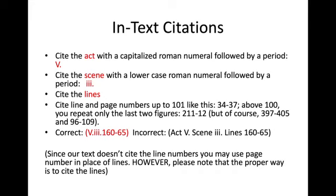When I cite the lines, I'm going to go back and use normal numbers. So when I cite line numbers up to 100, I'm going to write out those numbers with a dash in between. For example, if I was going to quote lines 34 to 37, I would write it as 34-37.